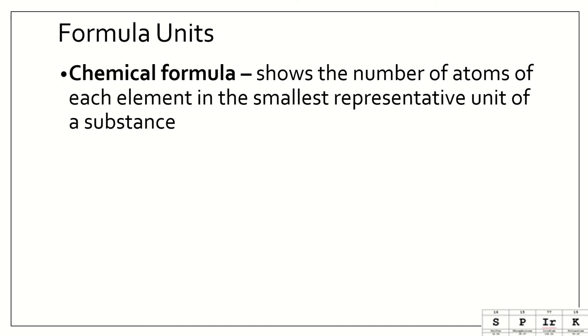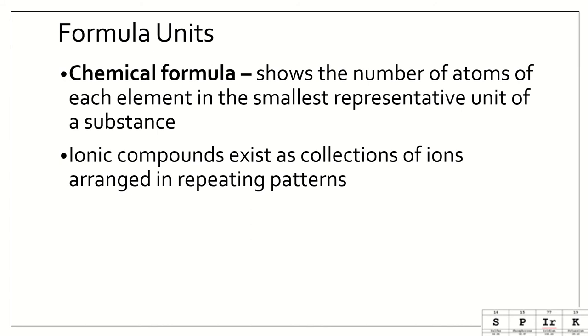Now, a chemical formula shows the number of atoms of each element in the smallest representative unit of a substance, and we've discussed these before, right? H₂O tells us that there is two hydrogens and one oxygen.